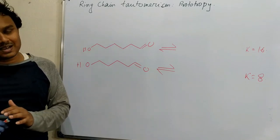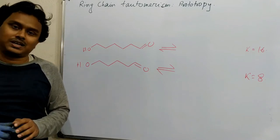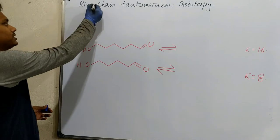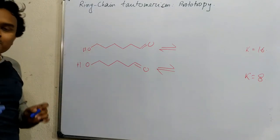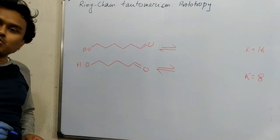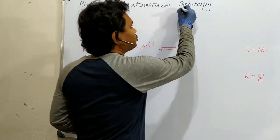Please watch until the end. Don't skip. Otherwise you may miss some unique logic and understanding. So see, this is a ring-chain tautomerism. Means it's a tautomerism between ring and chain. And this type of tautomerism belongs to one name or study which is prototropy.